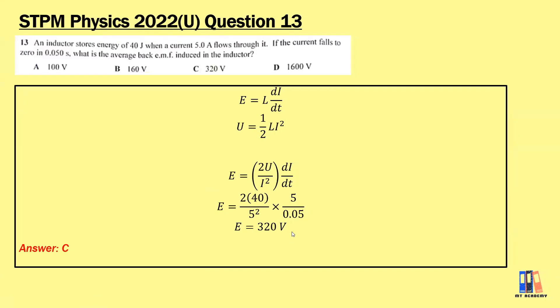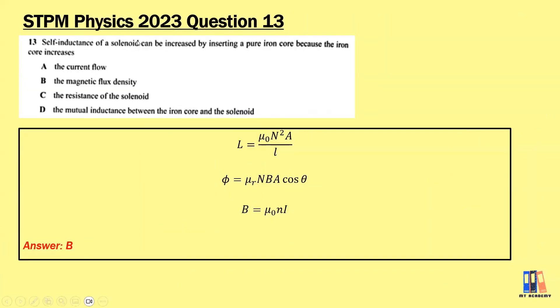We shall move on to the last question for this video, Question in 2023. Self-inductance of a solenoid can be increased by inserting a pure iron core because the iron core increases... Answer is B, magnetic flux density. We know that the iron core will provide a higher permeability and actually it increases the magnetic field or the magnetic flux density. As you can see in the formula, although we can see L is directly proportional to μ₀ or the permeability of the medium, actually what the iron core is affecting is the magnetic flux or the magnetic flux density as you can refer to these two formulas. That's all for this chapter and thank you.